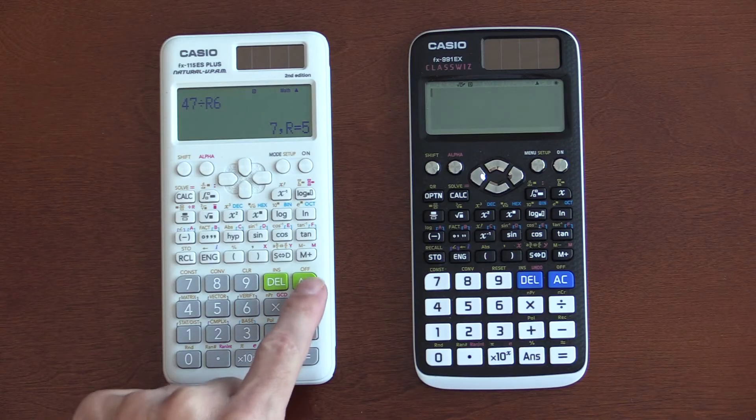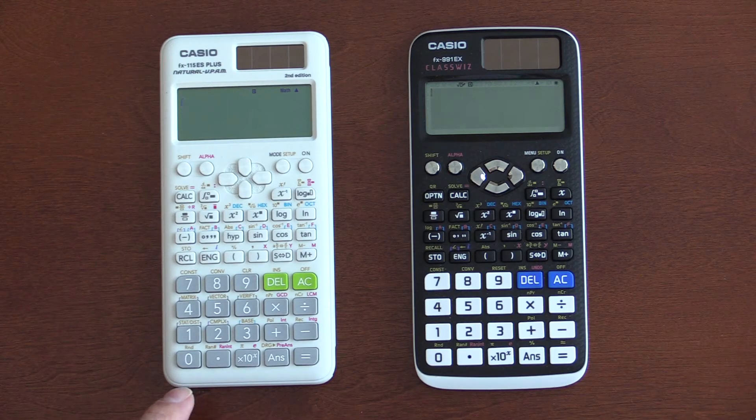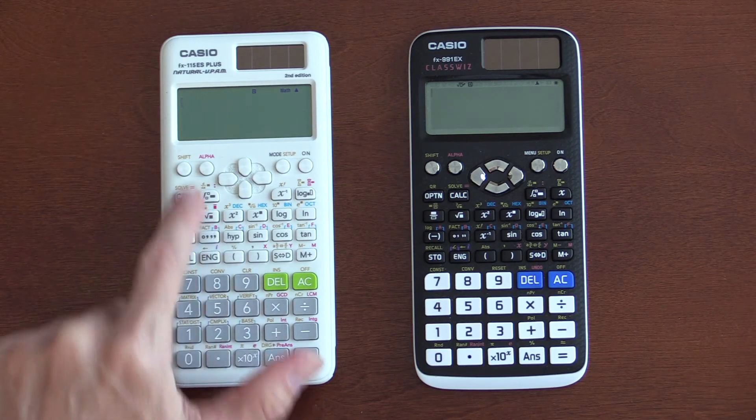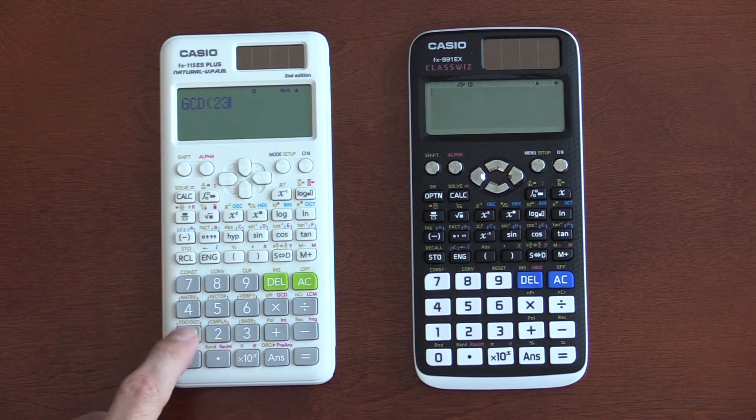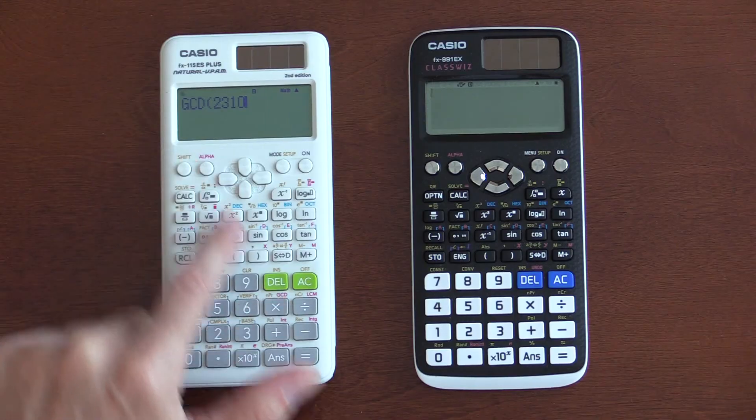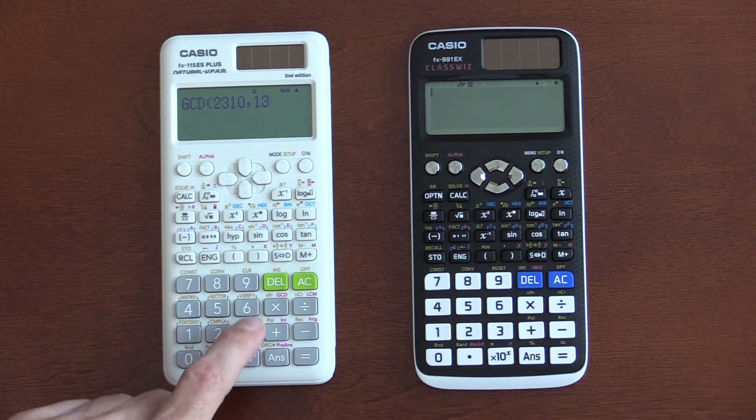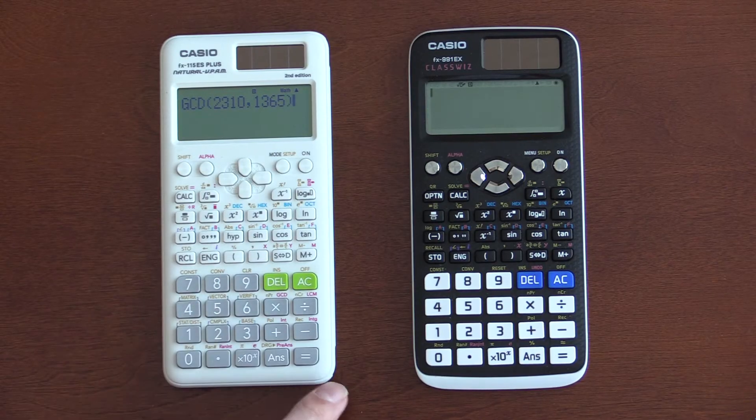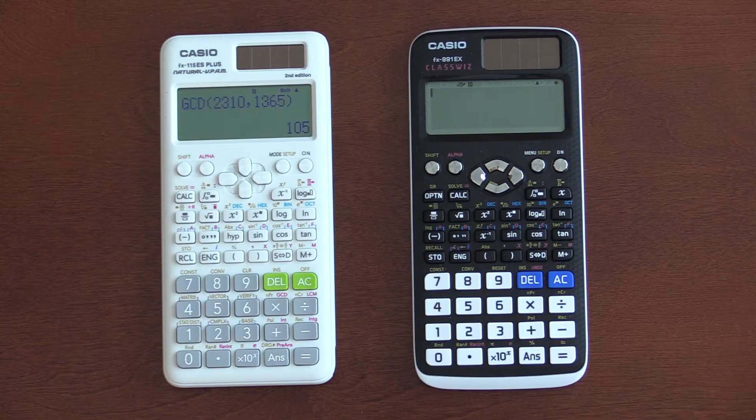Next, on the ES, you also have a greatest common divisor, GCD. So we can do GCD of 2310, comma is shifted, which I don't love that. It is on both calculators. On the SHARP, it's not. Hit equal, 105 is the greatest common divisor.